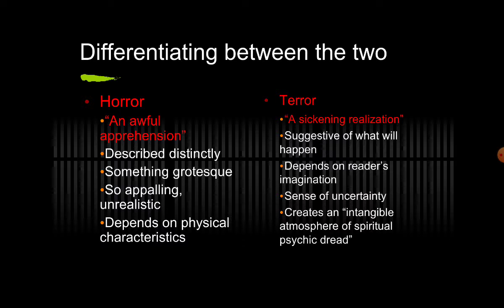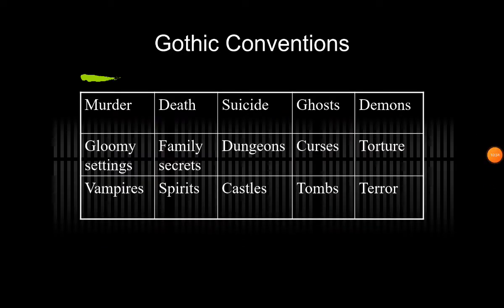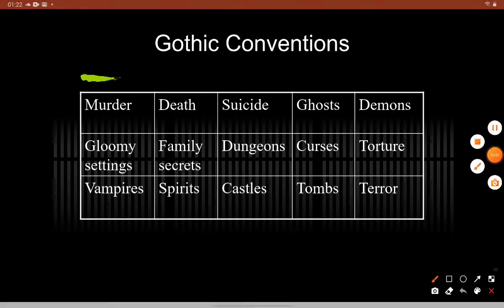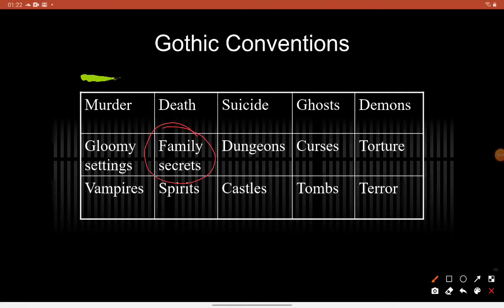These are some gothic conventions: murder, death, suicide, ghosts, demons, gloomy settings, and family secrets that are revealed at the end of the story. This is very important because in 'A Rose for Emily,' family secrets greatly affect the life of the protagonist. Also featured are dungeons — as in 'The Pit and the Pendulum,' where the protagonist is trapped in a weird dungeon.